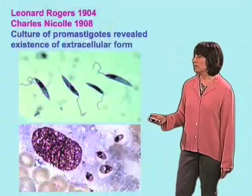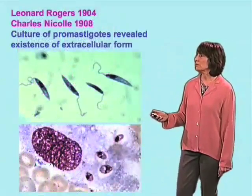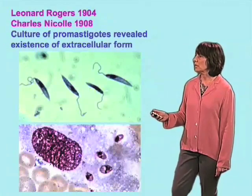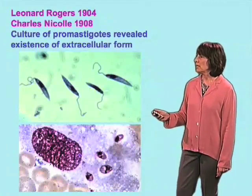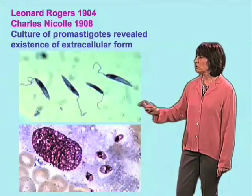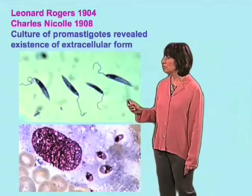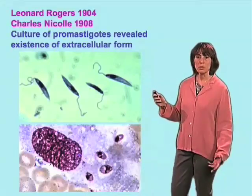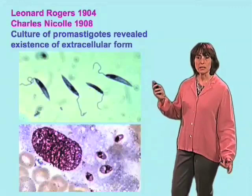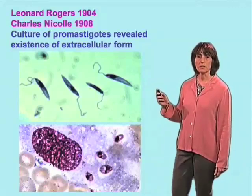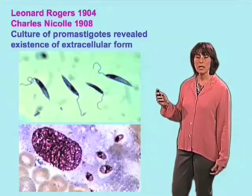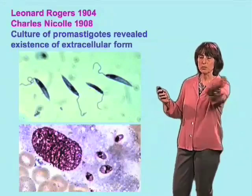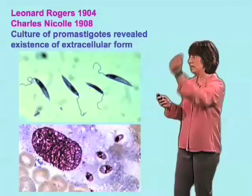Another very important finding in the history of Leishmaniasis was made by Rogers and Nicole a few years later, in which they took material from the spleen of the patients and put it into culture. They were able to show that a second form of the parasite appeared in these cultures, indicating directly the existence of a life cycle and most likely an insect vector.